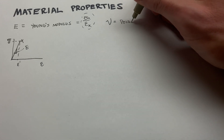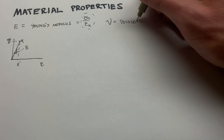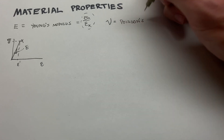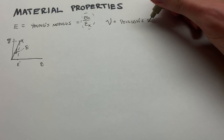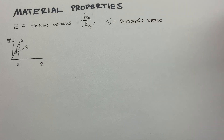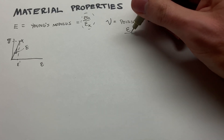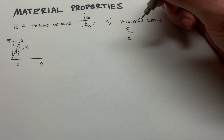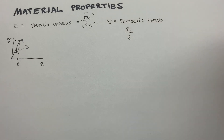This is the Poisson's ratio — not the poison ratio. It's a ratio of strains, which makes it a dimensionless number.